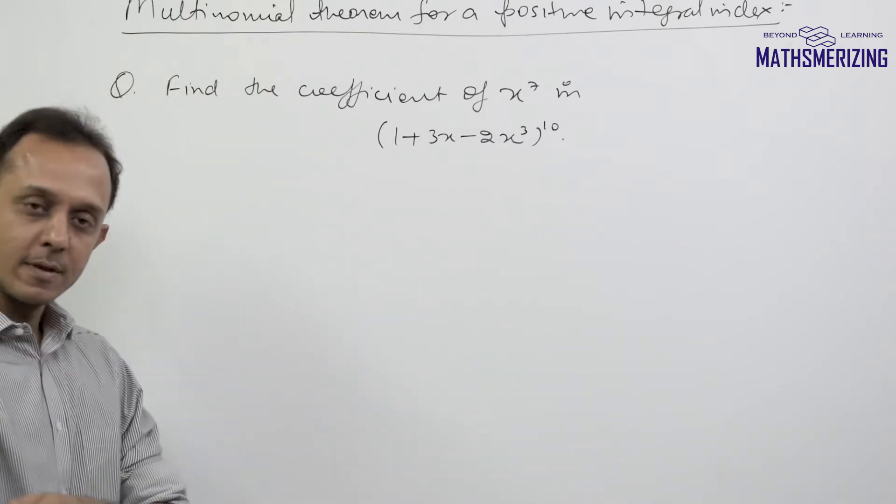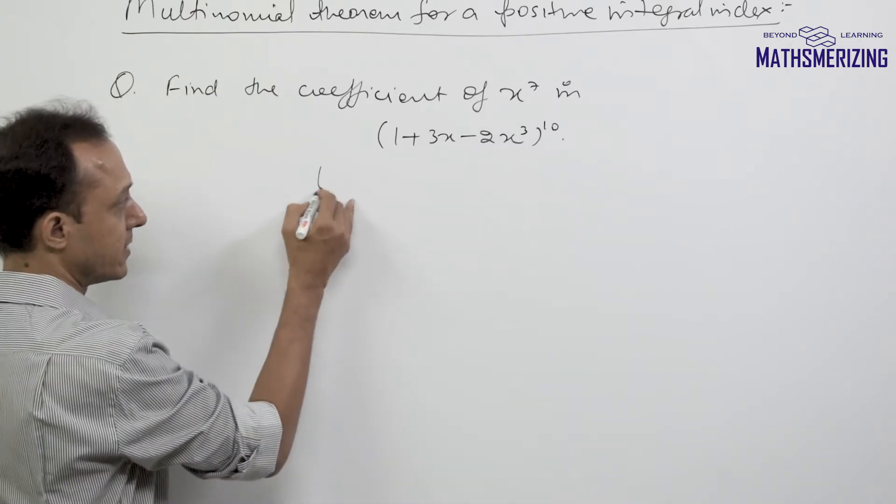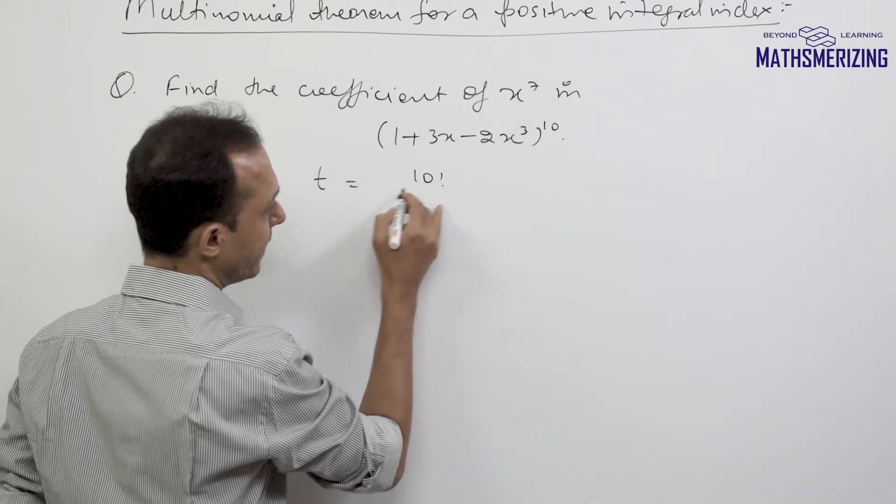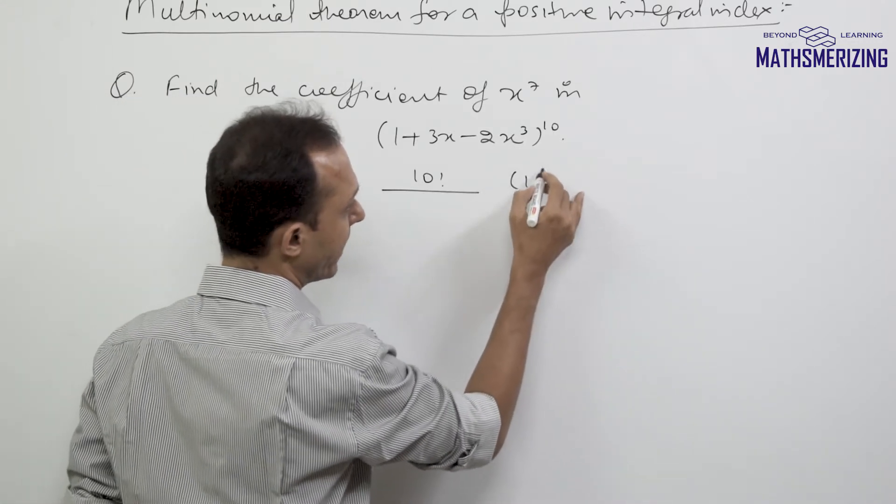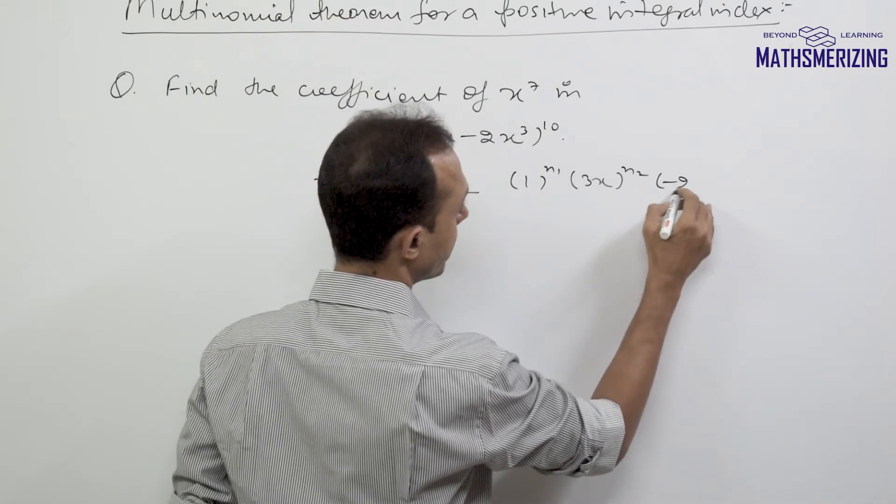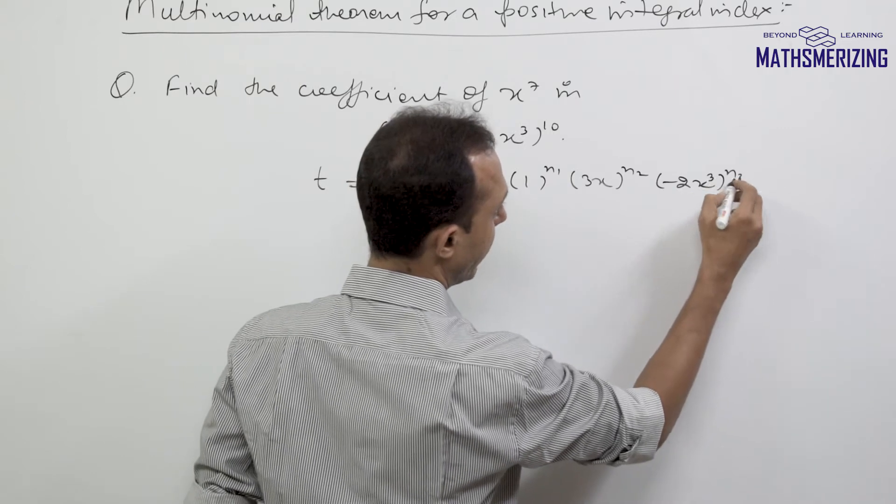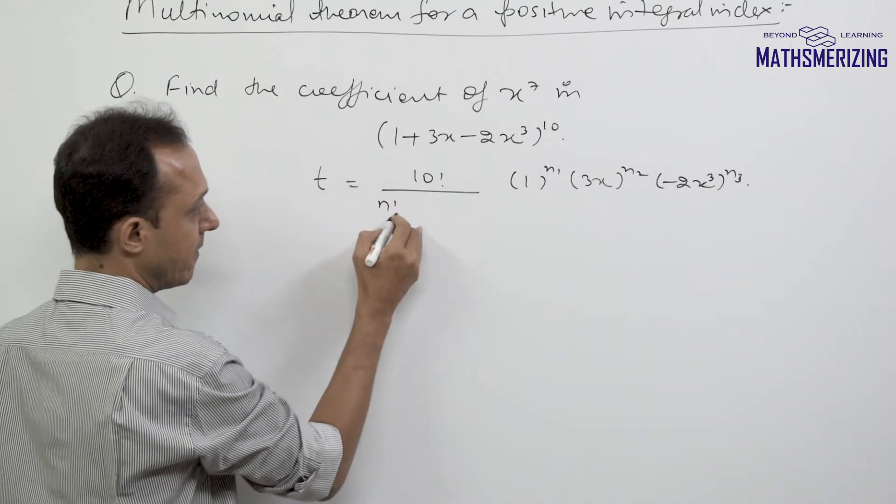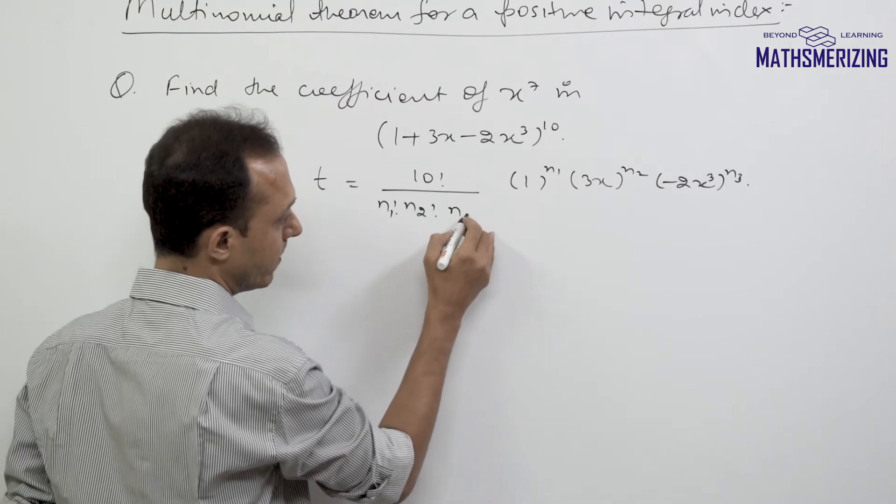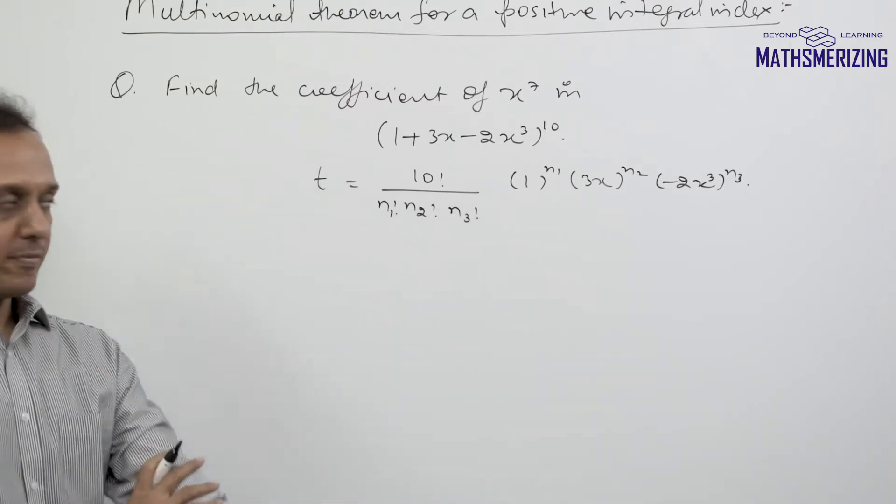I write its general term as 10!/(n1! n2! n3!) times 1^n1 times (3x)^n2 times (-2x³)^n3.